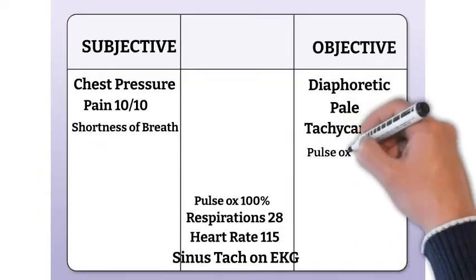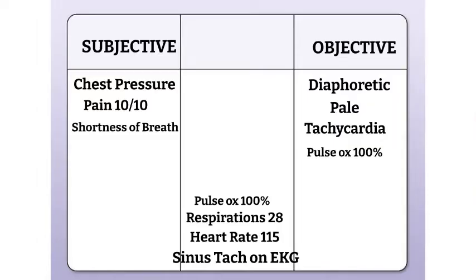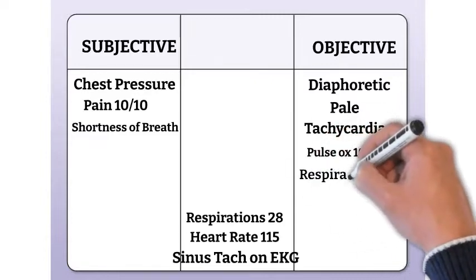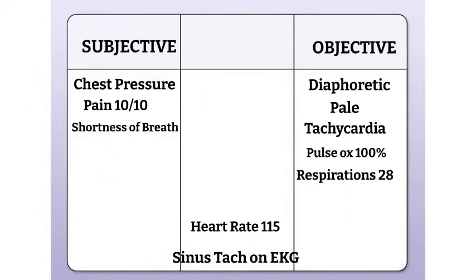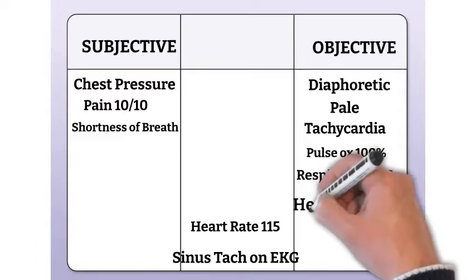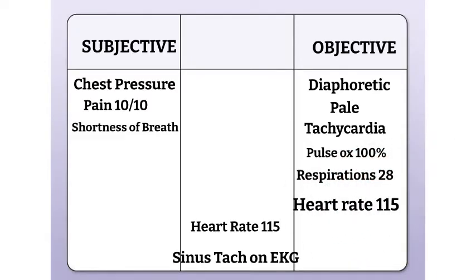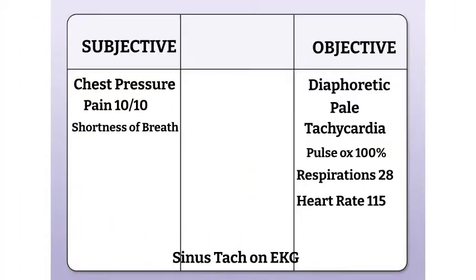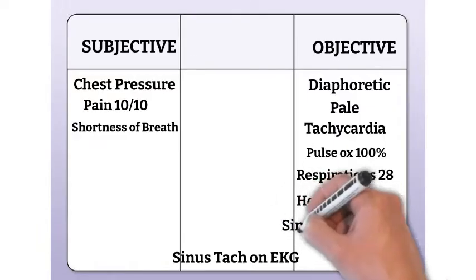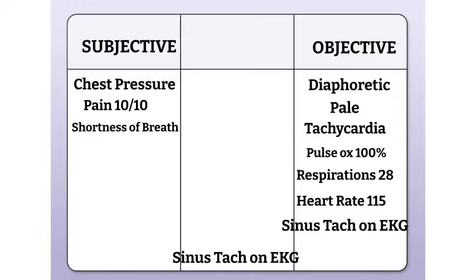The next piece of data is the pulse ox of 100%. We can measure this; it's a fact — it goes under objective. Next, we have the respirations of 28. Again, we can measure this, so it goes under objective. The same goes for that heart rate of 115 — we can measure it, there's no disputing it, it's a fact, therefore it's objective. And lastly, our EKG shows sinus tachycardia. This is definitely measurable; it's a result of a diagnostic test. Therefore, it is objective.